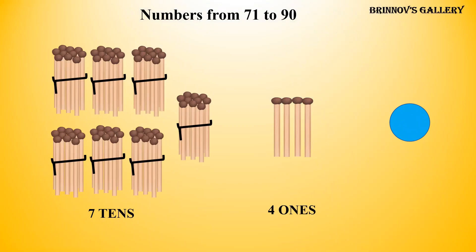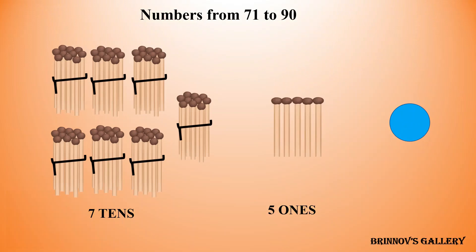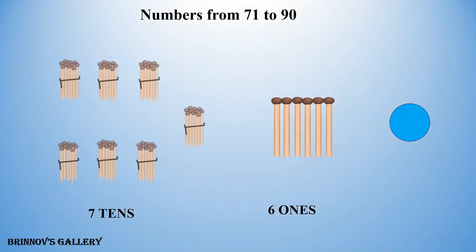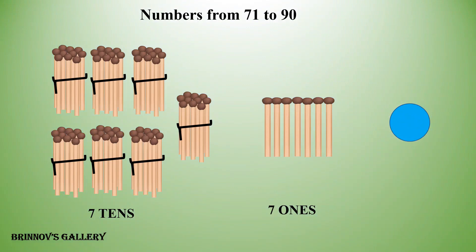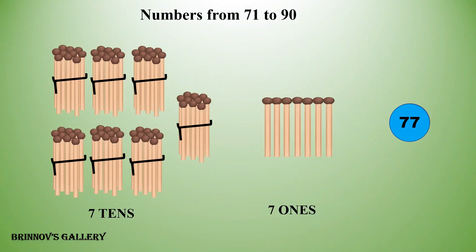7 tens, 4 ones — 74. 7 tens, 5 ones — 75. 7 tens, 6 ones — 76. 7 tens, 7 ones — 77.